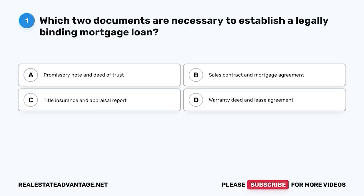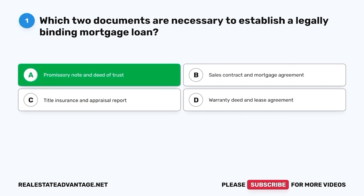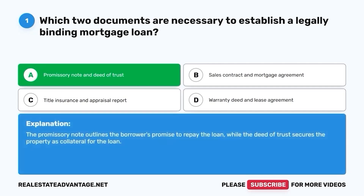Question 1. Which two documents are necessary to establish a legally binding mortgage loan? A. Promissory Note and Deed of Trust. B. Sales Contract and Mortgage Agreement. C. Title Insurance and Appraisal Report. D. Warranty Deed and Lease Agreement. The correct answer is A. Promissory Note and Deed of Trust. The promissory note outlines the borrower's promise to repay the loan, while the deed of trust secures the property as collateral for the loan.